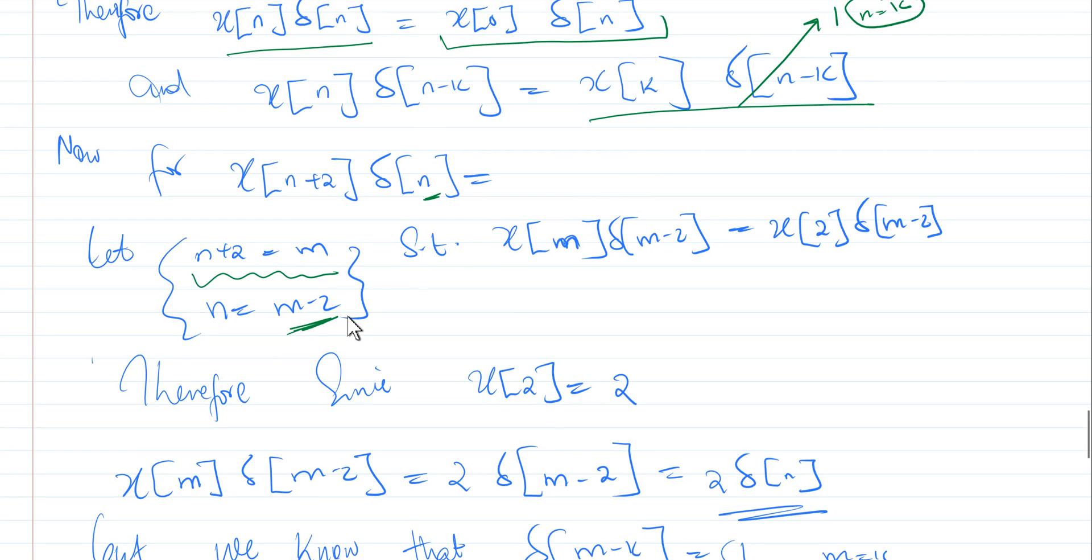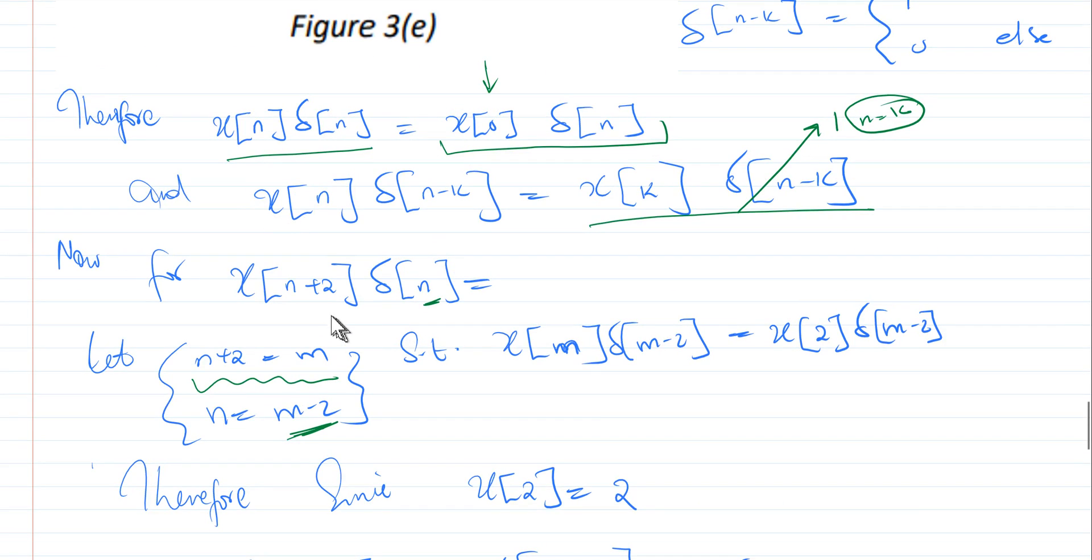So once we have done that, then our equation takes the form, this will become x of m, because n plus 2 is equals to m. And n will be replaced with m minus 2. And therefore we can simply say now from this equation that k is our 2 now. And therefore this will be equivalent to x of 2 multiplied with delta of m minus 2.